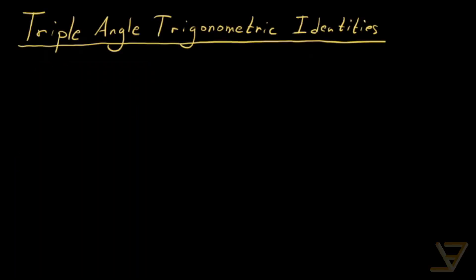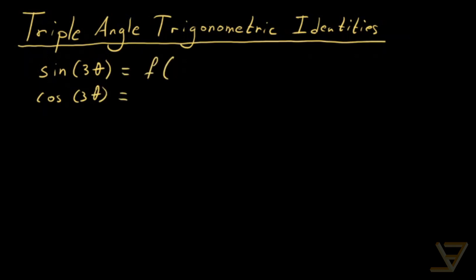Hi everyone. Let's talk about the triple angle identities in trigonometry. The goal is to write sine of 3 theta and cos of 3 theta as functions in terms of sine theta and cos theta respectively — reducing the input from 3 theta down to theta in each case.